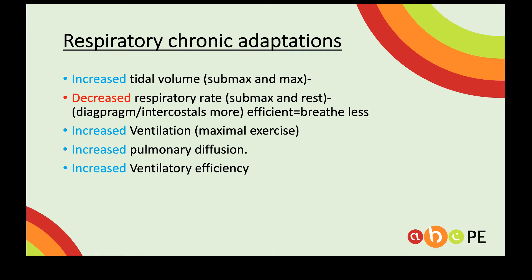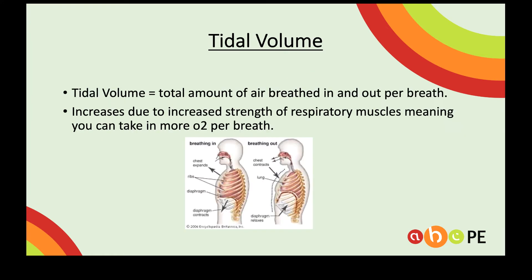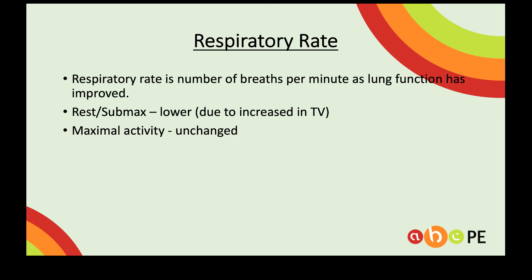Here's a quick list of the respiratory chronic adaptations we'll talk about today. First is tidal volume — the total amount of air breathed in and out per breath — and this will increase with training. It increases mainly because our intercostals and diaphragm become stronger, meaning we can breathe in more air by opening up our lungs a little bit more. Our respiratory rate at rest is actually going to decrease slightly due to the fact that our tidal volume has increased.